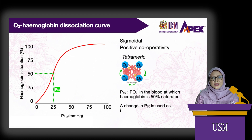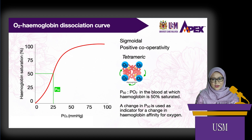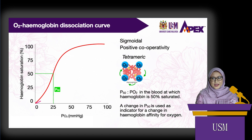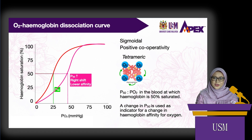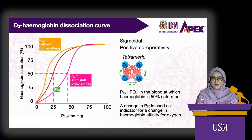The change in P50 value determines the change in hemoglobin affinity for oxygen. When P50 increases, affinity decreases; when P50 decreases, affinity increases. When P50 increases, the curve is said to shift to the right — hemoglobin affinity for oxygen decreases, so higher partial pressure of oxygen is needed for 50% saturation. Conversely, when P50 decreases, the curve shifts to the left — hemoglobin affinity increases, so lower partial pressure of oxygen is needed for 50% saturation. We will look at factors that may cause this right or left shift shortly.